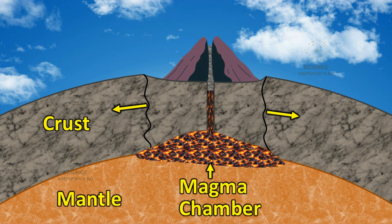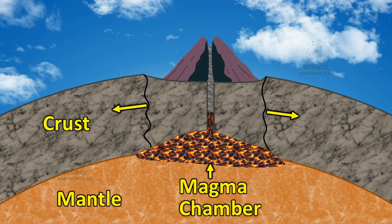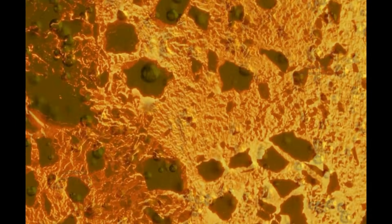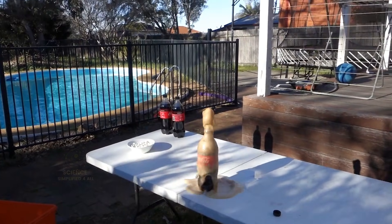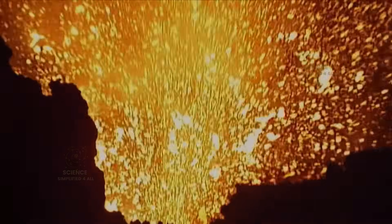As magma rises, its density keeps decreasing, and as its density decreases, its upward speed keeps increasing. By the time the magma travels several kilometers through the crust and reaches the surface, its rising speed can reach anywhere from 2 to 140 kilometers per hour. The dissolved gases inside continue to bubble out vigorously, just like the fizzing bubbles that burst out of a shaken cola bottle. When this mixture of magma and gas finally breaks through the surface, that is when we witness a volcanic eruption.